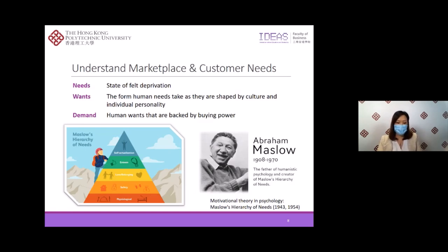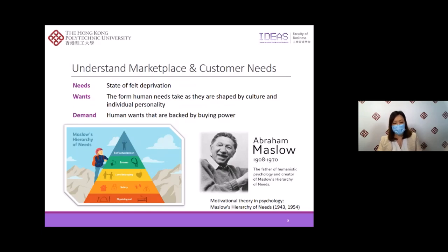So what motivates customers to buy a product? In general, customers will start looking for a product when they recognize there is a need or want. Marketers have to understand the needs, wants, and demands of their customers. The most basic concept underlying marketing is that of human needs. Human needs are states of felt deprivation which drive people to buy. There is a classic motivational theory in psychology — Maslow's hierarchy of needs theory — which puts forward that people are motivated by five basic categories of need: physiological needs, safety, love and belonging, esteem, and self-actualization.